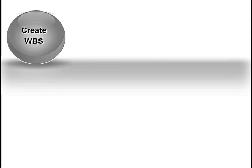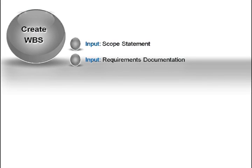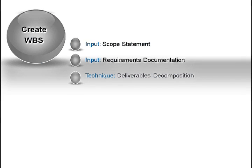The inputs to this step include the scope statement, the requirements documentation, and the processes your organization uses during scope development. In the last video about scope, I explained that the PMBOK suggests you finish the scope statement and requirements prior to starting the WBS. In my experience, it never works that way — you actually create all three at the same time.